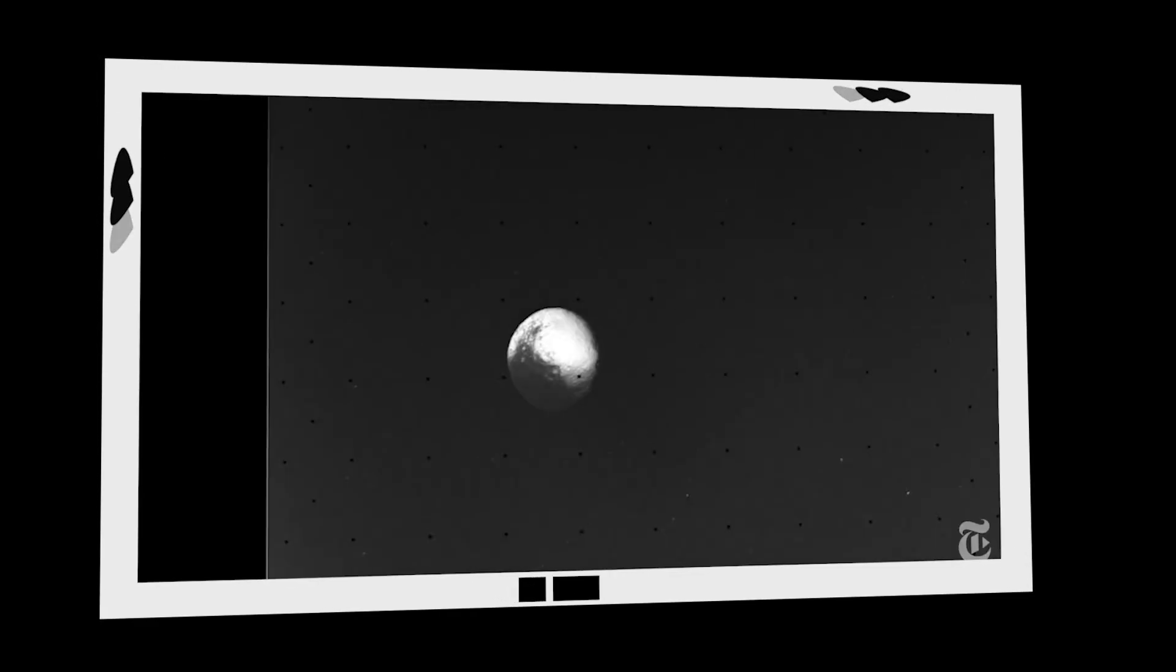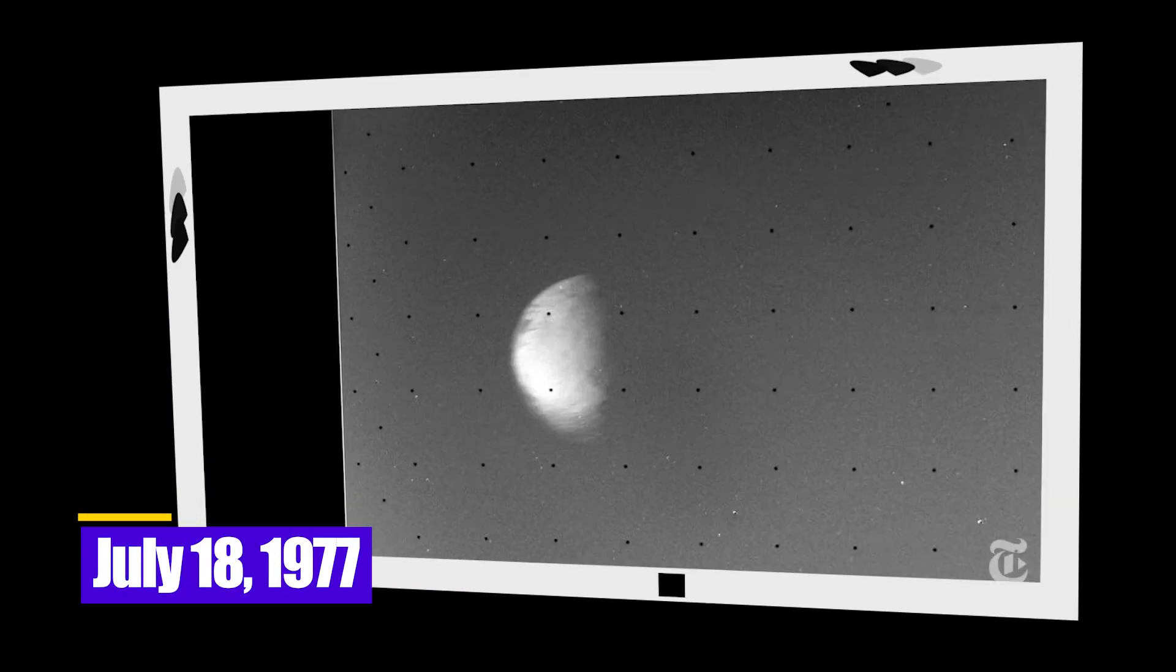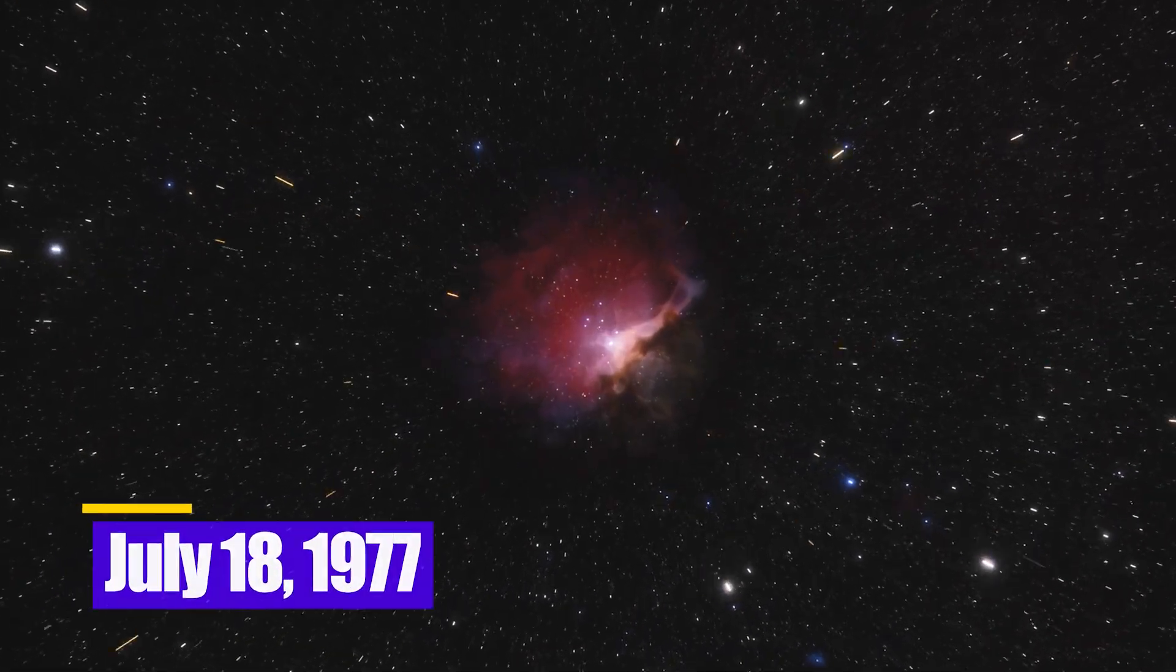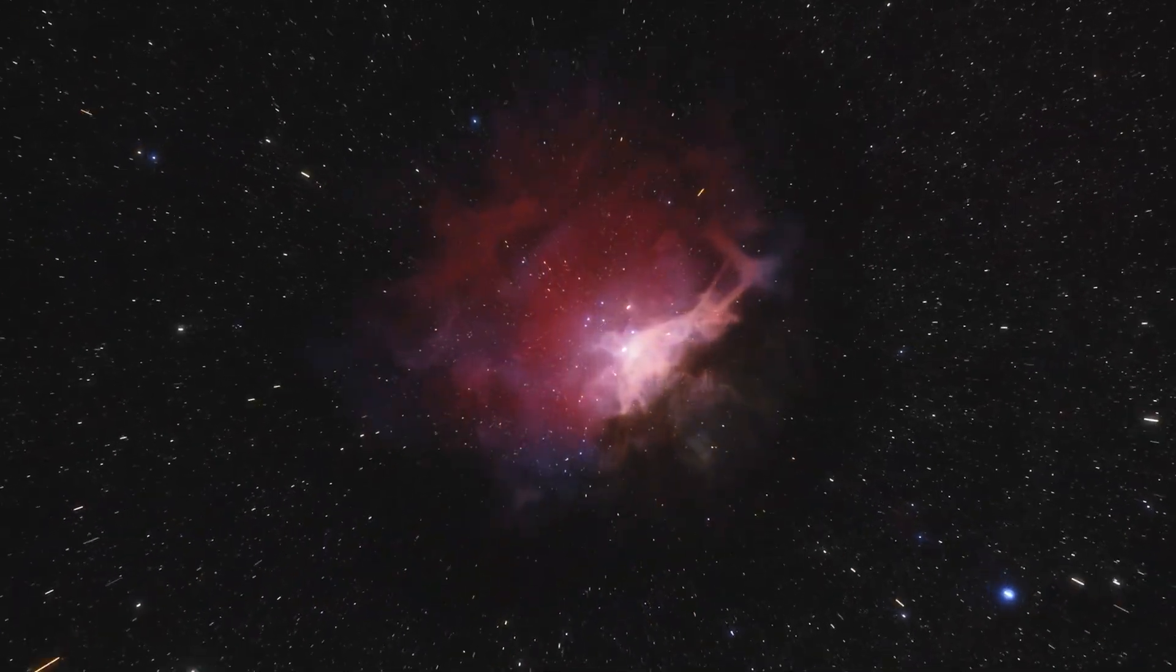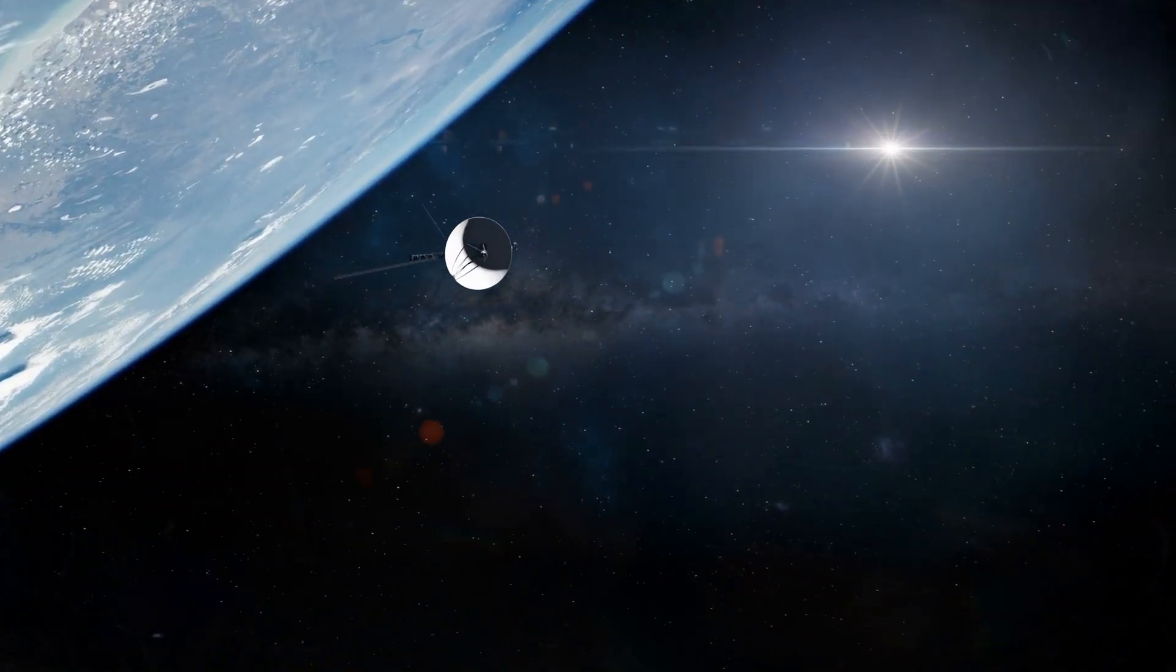The first photos of the Moon and Earth in the same frame were taken on July 18, 1977, when both spacecraft were on their way to explore the cosmos. NASA had already started to make history at this point.